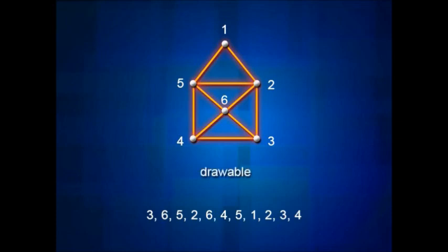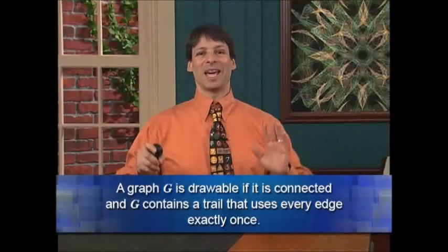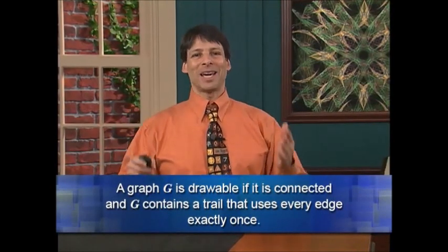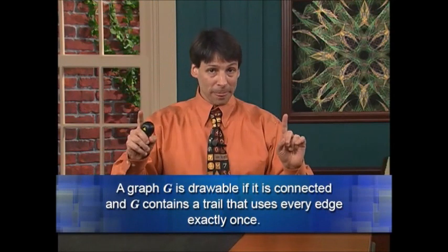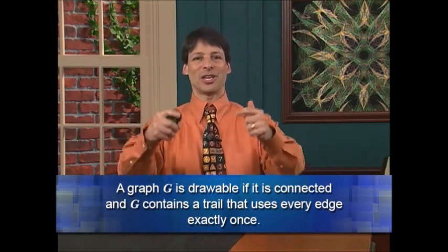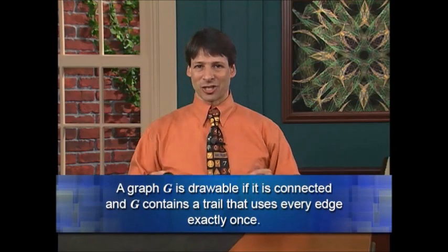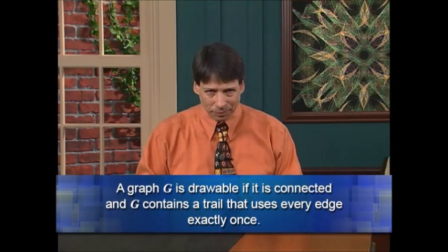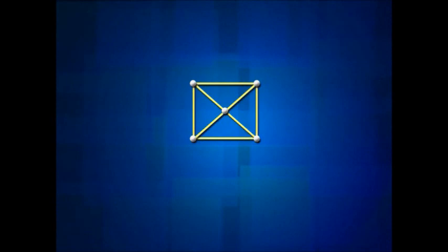The official definition: a graph G is drawable if it's connected and G contains a trail that uses every edge exactly once. So for example, is this graph drawable — the same graph without the little roof on top? You can try all you'd like, but the answer is no. This graph is not drawable; if you wanted to draw every edge you would have to retrace an edge.